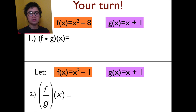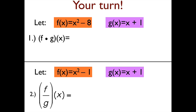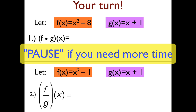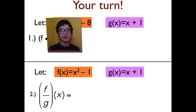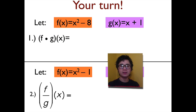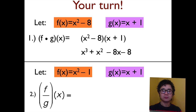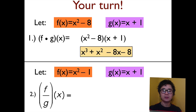Try to evaluate the two functions. If your answer is correct, for the first one, f times g of x is equal to x cubed plus x squared minus 8x minus 8. And for the second problem, f over g of x.